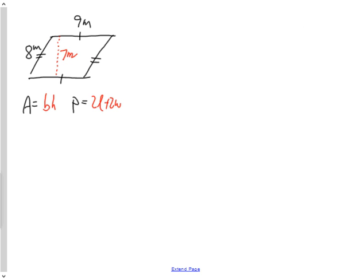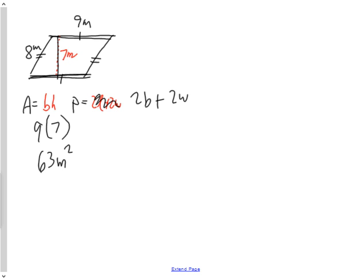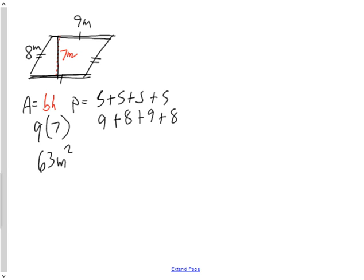The last basic shape is the parallelogram. The formula is base times height, where the base is 9 meters and the height is the perpendicular distance — not the slant side — which is 7 meters. So 9 times 7 is 63 meters squared for the area. For perimeter, we add all four sides: 9 + 8 + 9 + 8 = 17 + 17 = 34 meters.